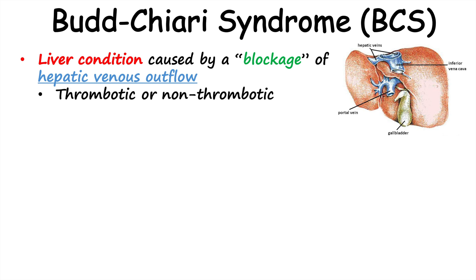It's important to note that the blockage in Budd-Chiari syndrome can be either thrombotic or non-thrombotic. Thrombotic means it is from a thrombus or a clot — we'll talk about conditions that increase clotting risk in the next slide. Or it can be non-thrombotic, where some other process occludes or leads to blockage of hepatic venous outflow.